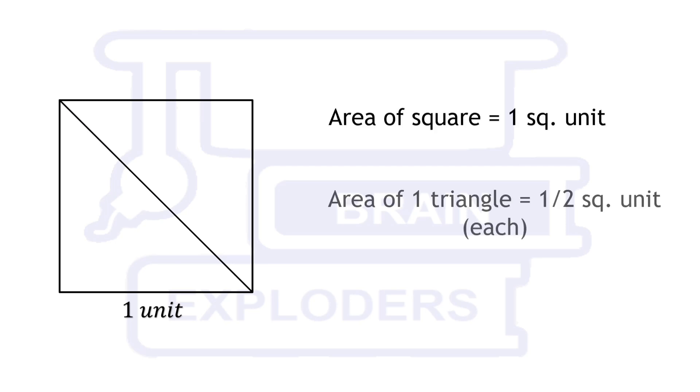In the given problem, a square of side 1 unit is cut along a diagonal. Area of the square is one square unit thus area of obtained triangle is half square unit.